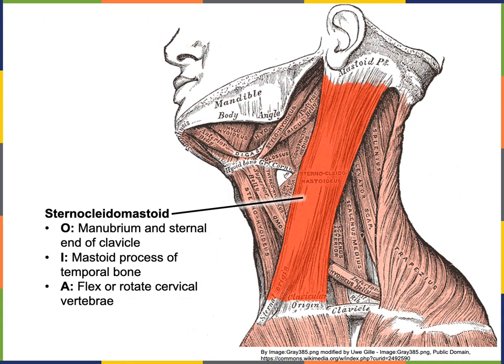The sternocleidomastoid is a large superficial muscle in the cervical region with its origin from the manubrium and the sternal end of the clavicle. Its insertion is the mastoid process of the temporal bone, and its action is to flex or rotate the cervical vertebrae — to flex or rotate the head at the neck.